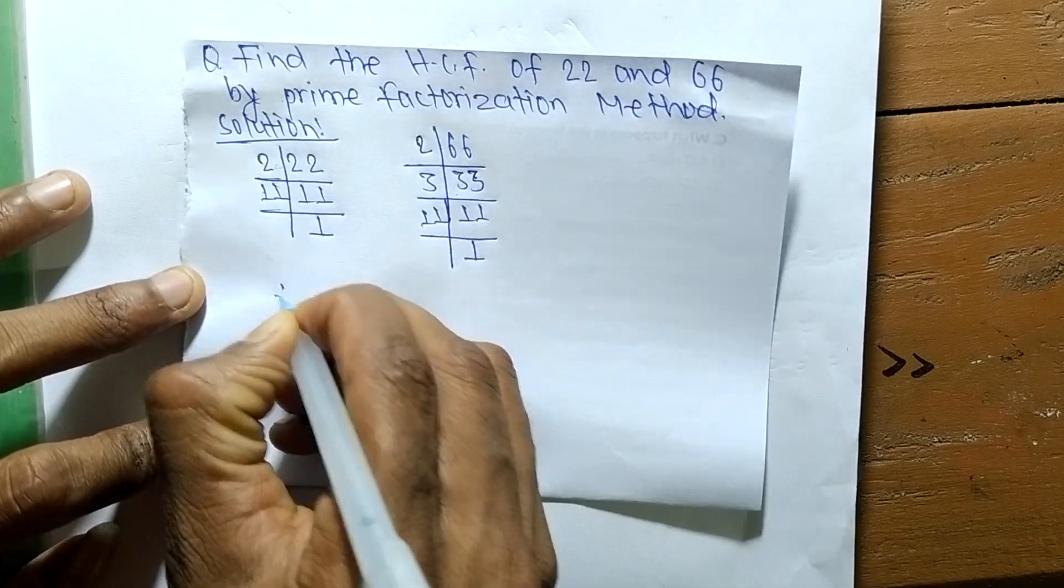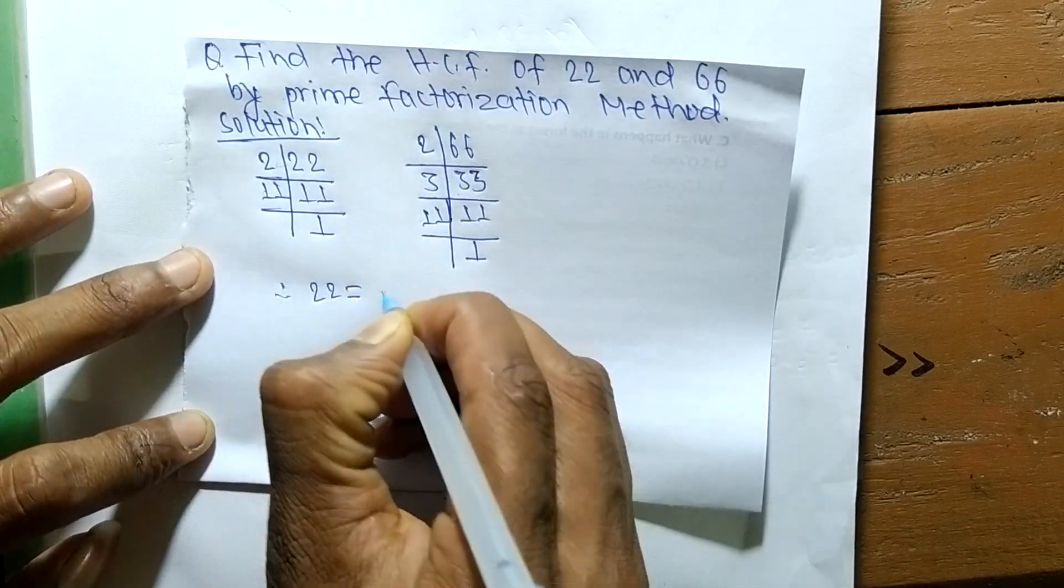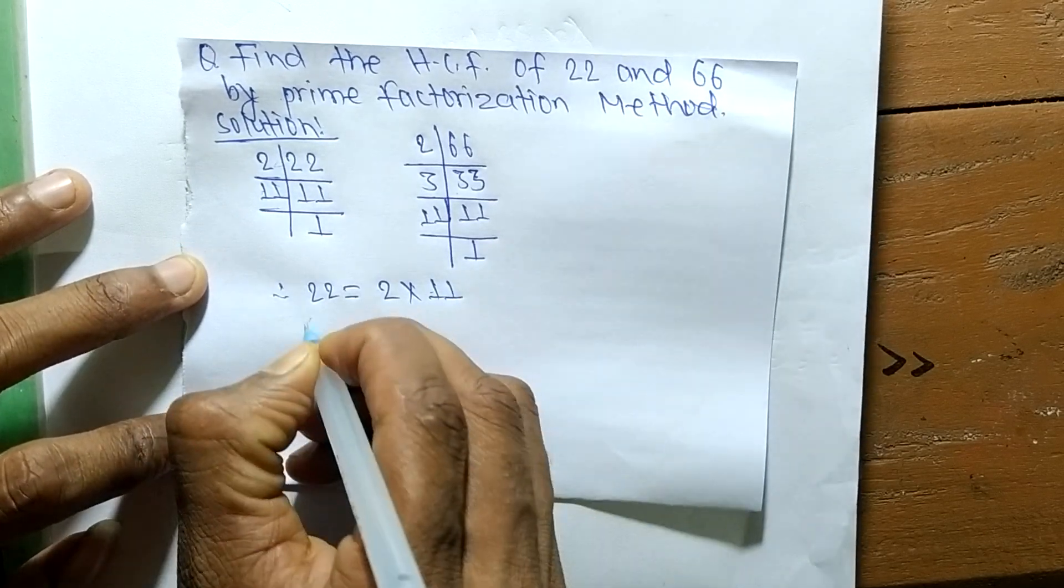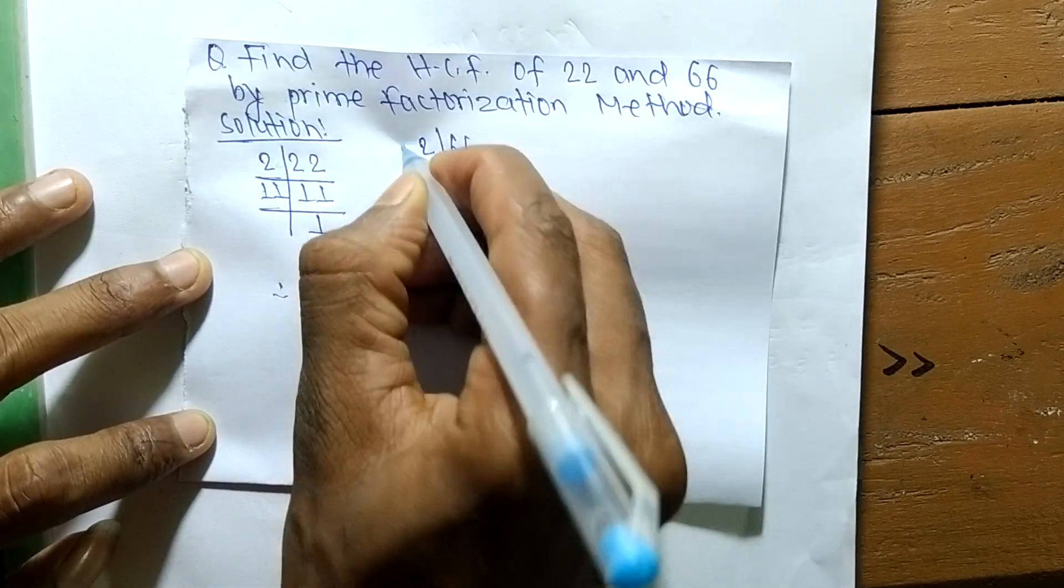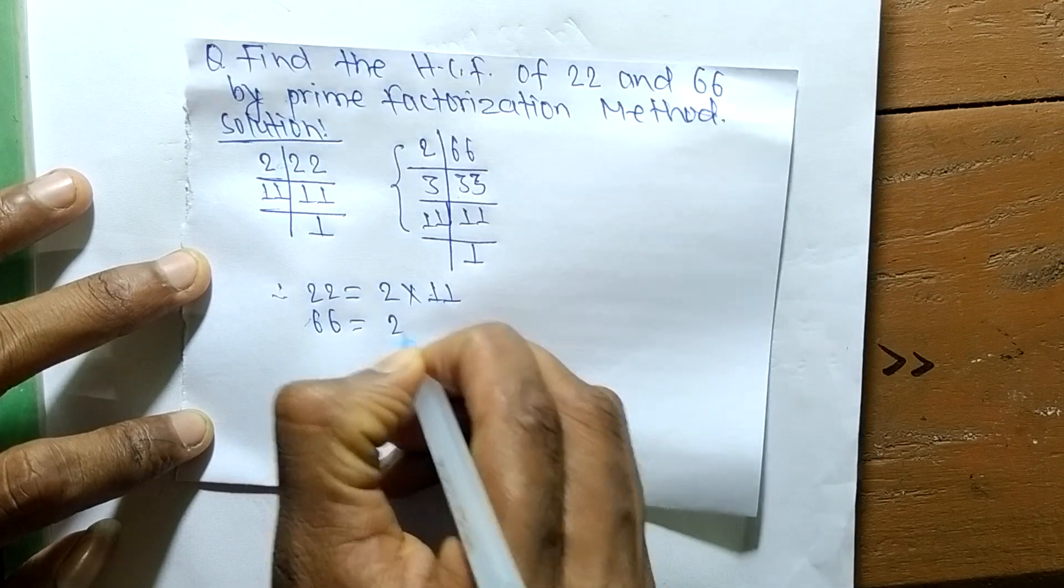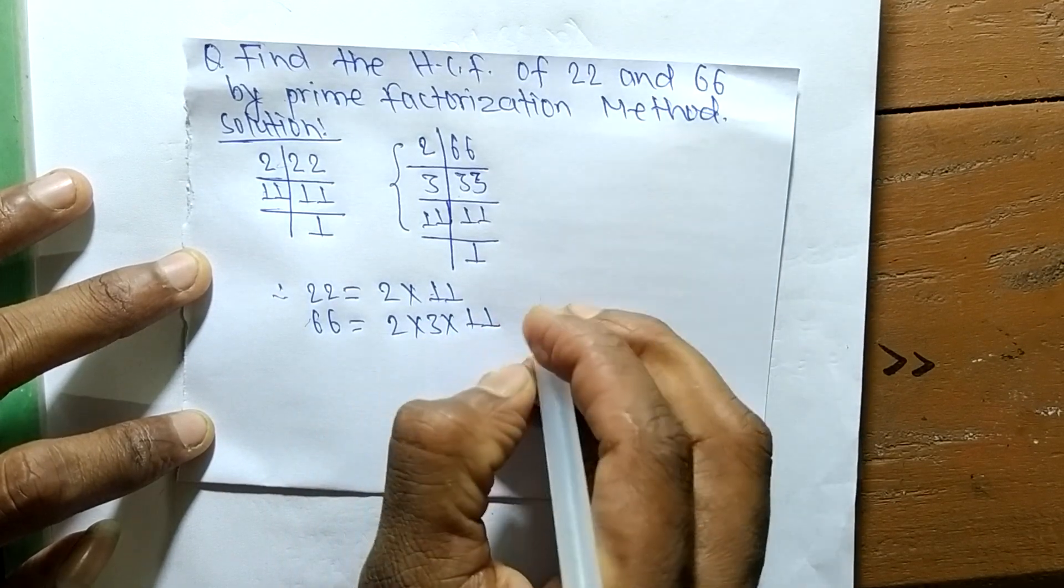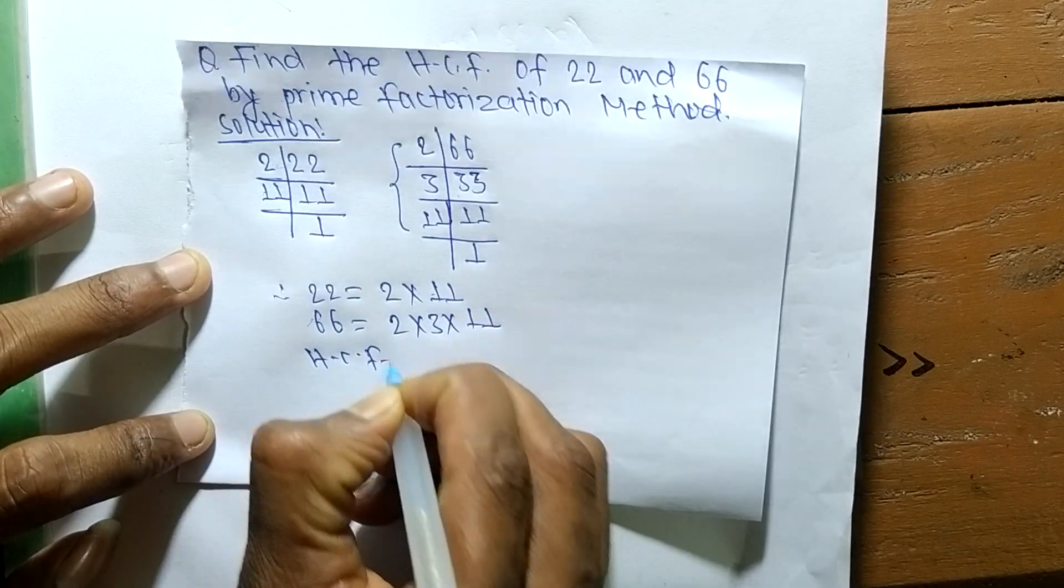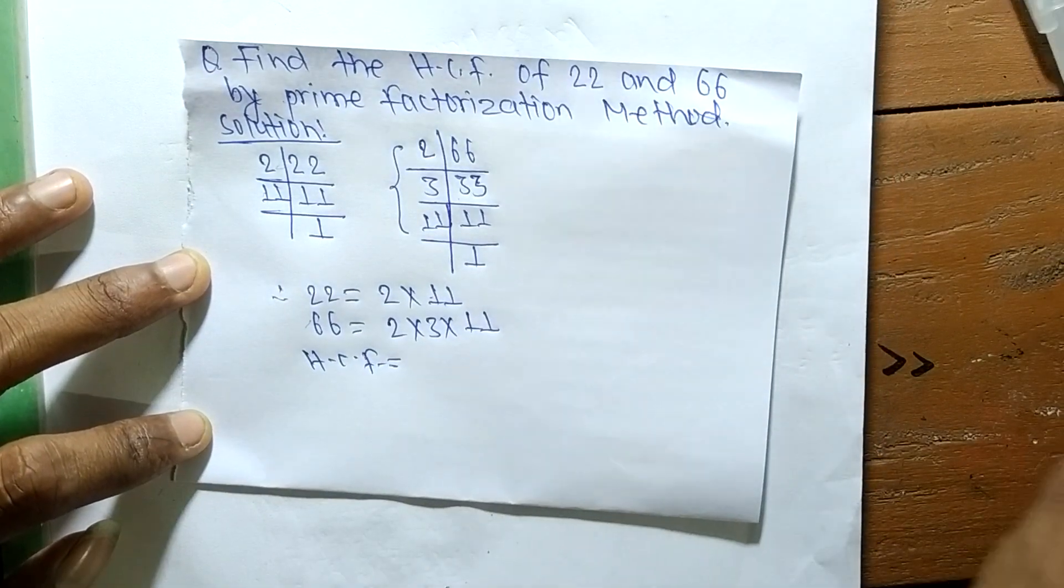From these prime factors, we can write 22 is equal to 2 times 11. Likewise, 66 is equal to, from this part, it is 2 times 3 times 11. So its HCF is equal to, now we have to find out the common factors in the prime factors of 22 and 66.